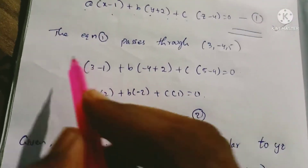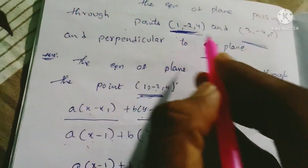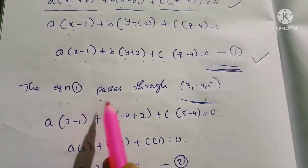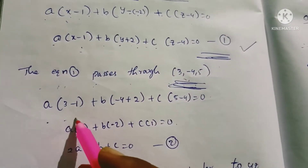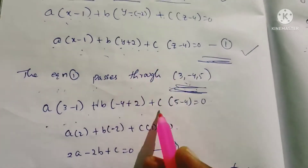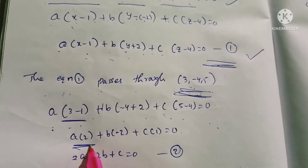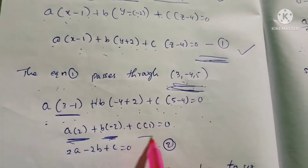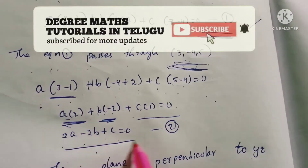Equation 1 passes through the second point (3, -4, 5). Substituting into the plane equation: A(3 - 1) + B(-4 + 2) + C(5 - 4) = 0. So, 2A - 2B + C = 0.